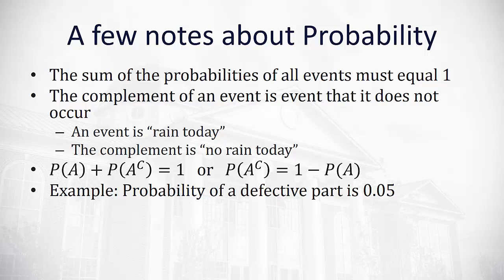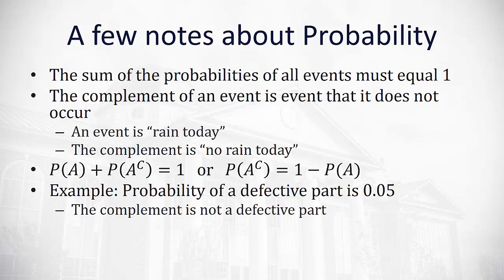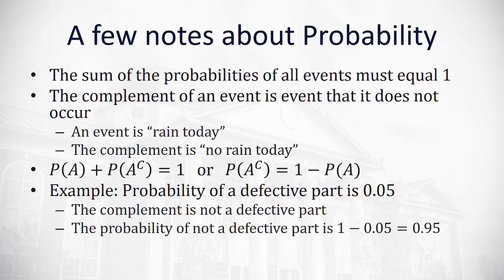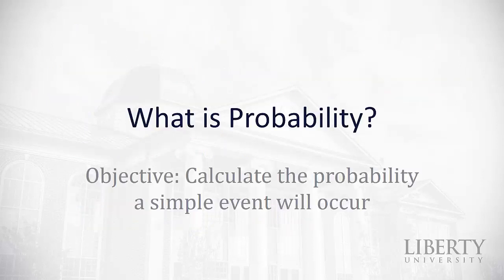For example, if the probability of a defective part is 0.05, the complement would be that we do not have a defective part. We calculate that probability by taking 1 minus 0.05, which is 0.95. So the complement — not a defective part — has a probability of 0.95. Hope this video introducing probability has been helpful as you begin working with probabilities and calculating the probability that a simple event will occur.